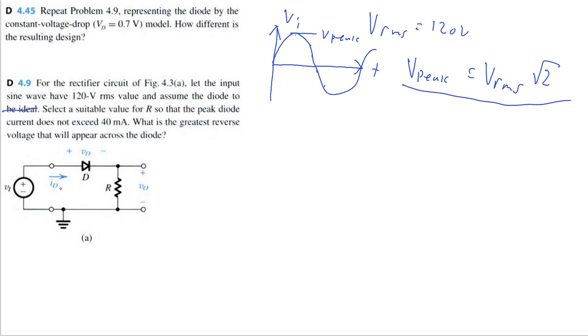So if you want to solve for a suitable R so that the current does not exceed 40 milliamps rms, well how can we express the current? We know that V equals I·R, so therefore I equals V divided by R. So what's the voltage across this circuit? Well, it would be V_in, or in this case we're wanting to use the peak value, because we want the peak current to not exceed 40 milliamps.